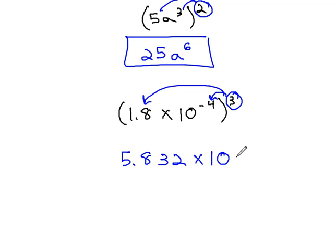And then on the tens, we use our exponent property, which says we multiply the exponents. Negative 4 times 3 is negative 12.